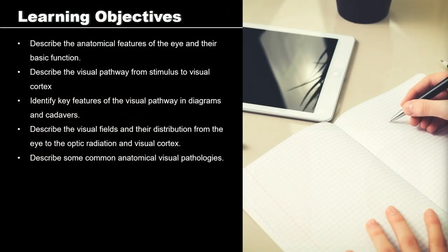And that was a lot of words and a lot of confusing imagery, so well done if you've made it this far. You should now feel more confident in tackling your learning objectives for today. You should now be able to describe the anatomical features of the eye and their basic function, describe the visual pathway from stimulus to visual cortex, identify key features of the visual pathway in diagrams and in cadavers, describe the visual fields and their distribution from the eye to the optic radiation and the visual cortex, and describe some common visual pathologies.